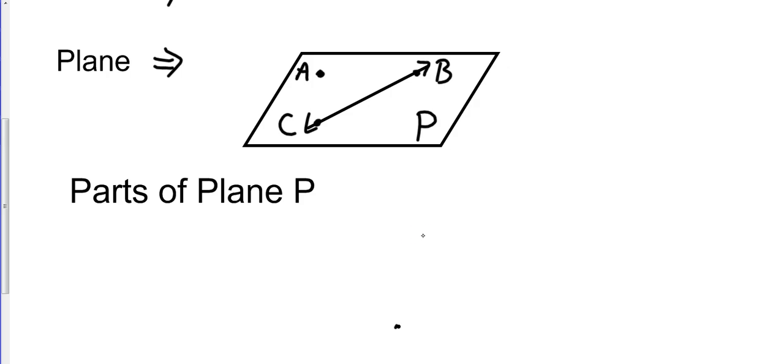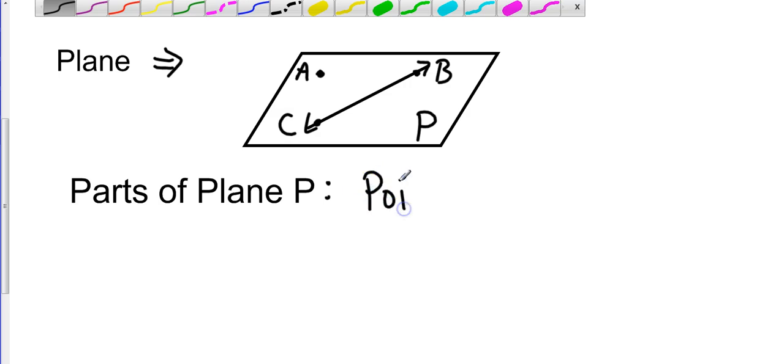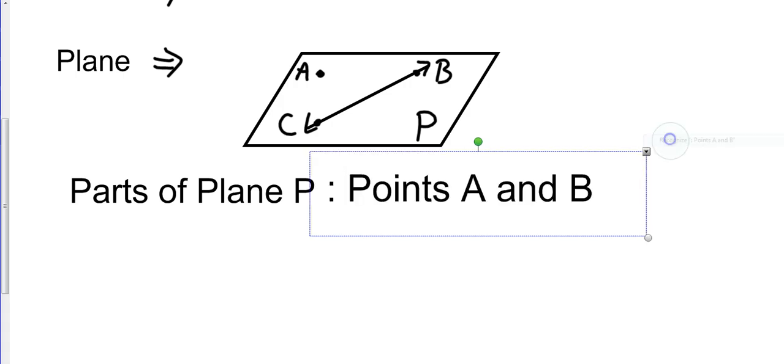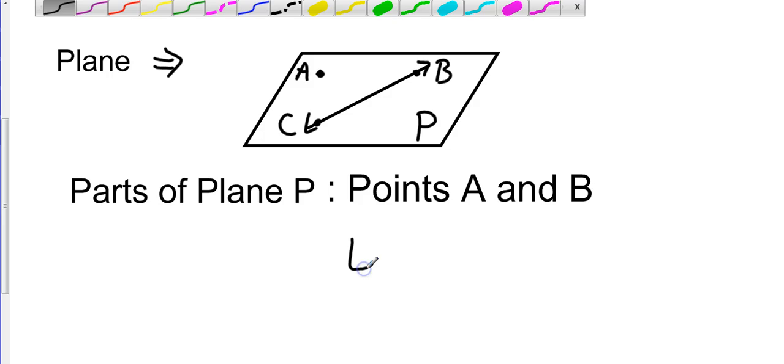So the parts of plane P are going to be points A and B, and it's also going to have line CB.